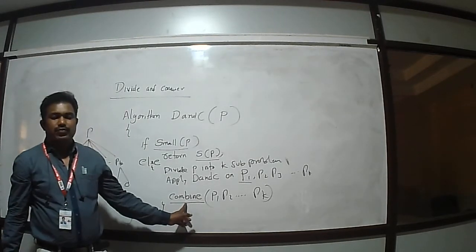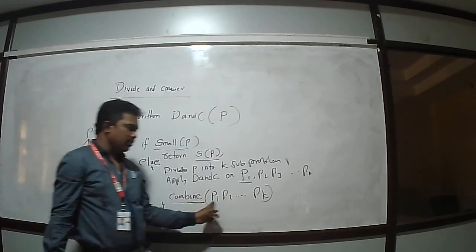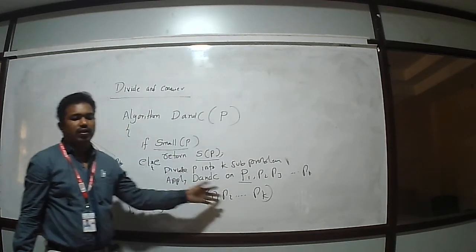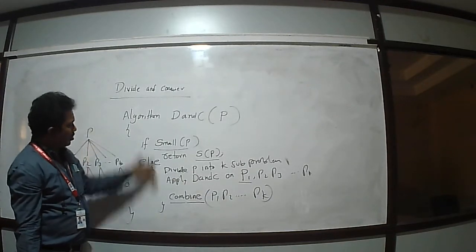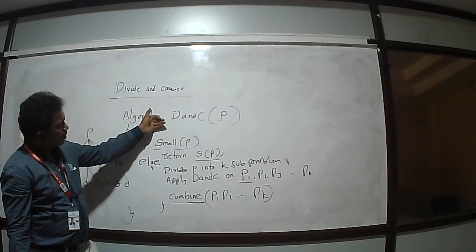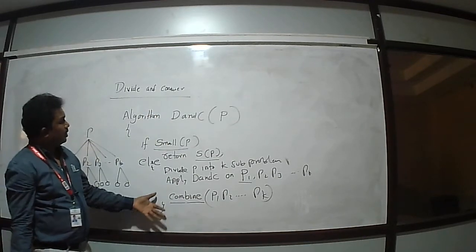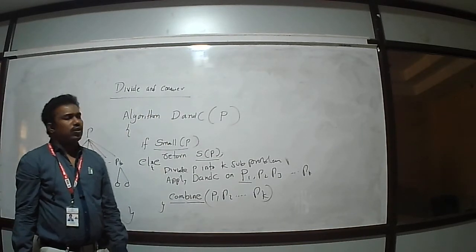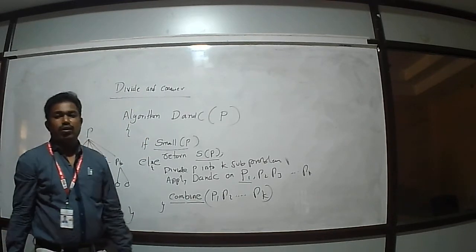The next step is Combine — combine the solutions of all the sub-problems to get the solution for the given problem. That is the general method, or control abstraction, of Divide and Conquer.